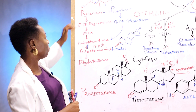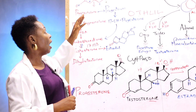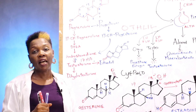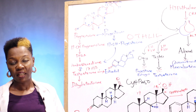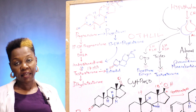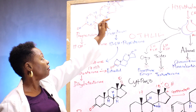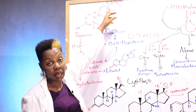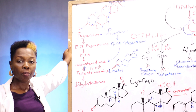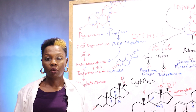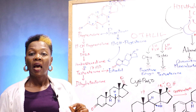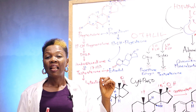Going back to the steroidogenic pathway — cholesterol is the starting material, and we have an enzyme that acts at point 22. This enzyme is called the side chain cleavage enzyme, a cytochrome P11A1 enzyme. It cleaves off the carbon atoms at point 22 to give us the first compound in the steroidogenic pathway called pregnenolone. This reaction is called the rate-limiting step.